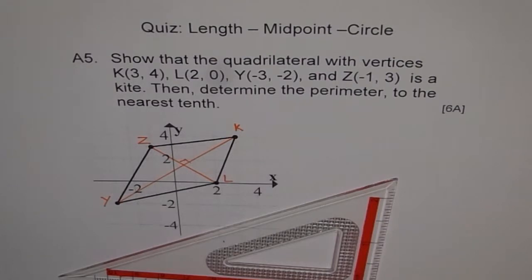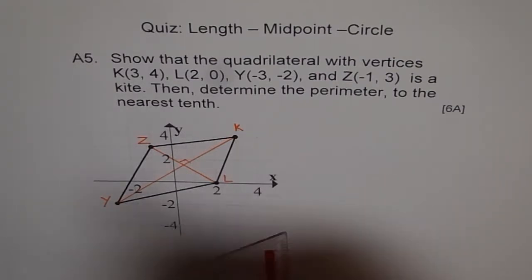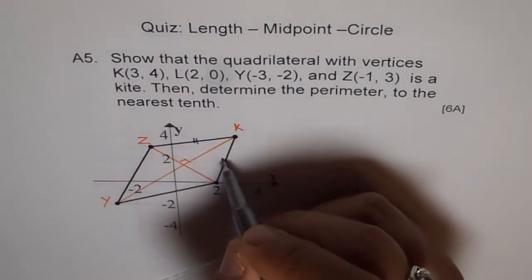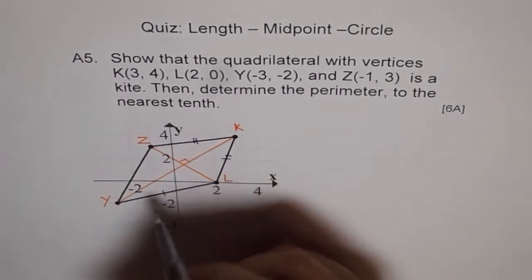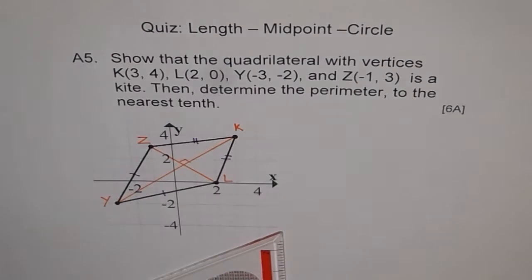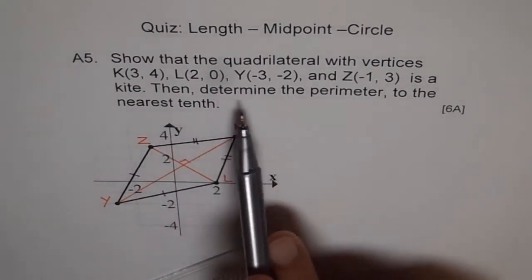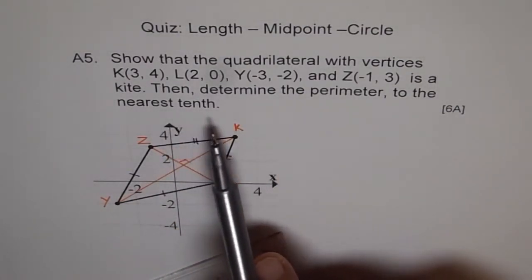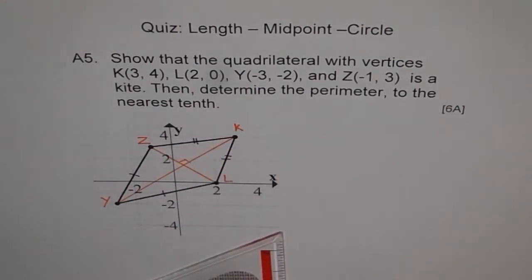What are the other characteristics we should prove? We should prove that this side is equal to this side and this side is equal to this side. That is the second thing we need to prove. The third thing is to determine the perimeter to the nearest tenth through simple calculations.